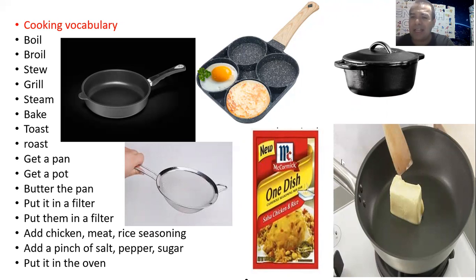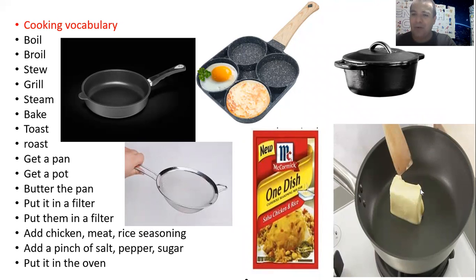Next one: butter the pan. Butter the pan is the action of buttering — like you see in this picture, buttering the casserole or the pan. So you basically put some butter all around the casserole or the pan so the food cannot stick inside. That's why we use butter, oil, or some type of greasy ingredients, so the food cannot stick to the sides or at the bottom of the different pots and pans.